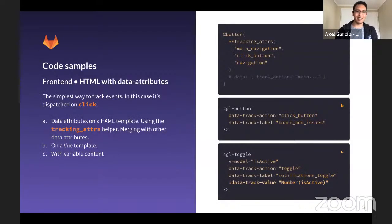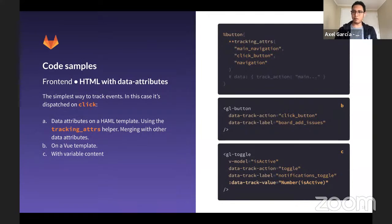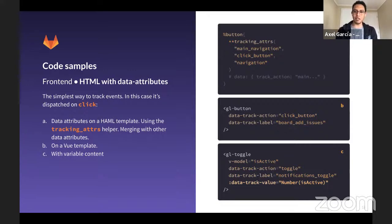The first way to declare events is with HTML and data attributes — the simplest way — automatically dispatched on click. In example A, we have data attributes on a Haml template using the tracking attributes helpers, which merge with other data attributes on that element. Example B uses the same data attributes on a Vue component, in this case a GitLab UI button. Example C uses variable content on the data-track-value property. You can see these data attributes match the taxonomy we showed before.